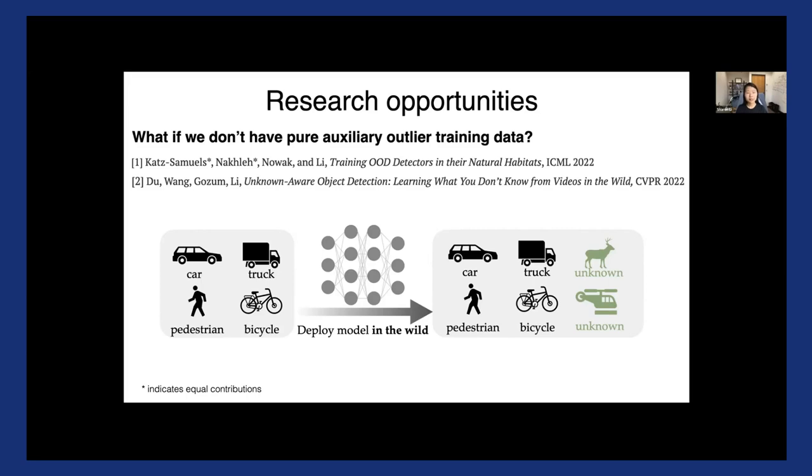However, the challenge here is that, you know, the wild data is not pure, right? It's actually a mixture of those in distribution and OOD. And the interesting research question here is how do we get around this issue? And so if you're interested, please check out, for example, our ICML papers that's coming out this year for methodologies of working around this and some theoretical guarantees.